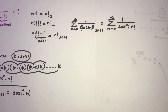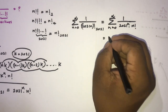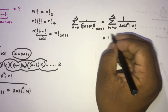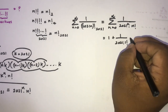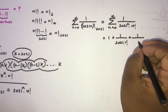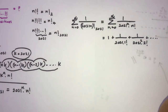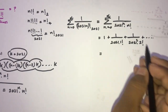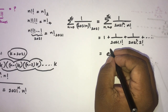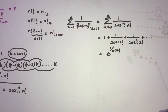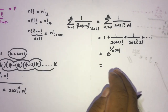If we expand this: plugging in 0 gives the first term 1, plugging in 1 gives one over 2021 times one factorial, plugging in 2 gives one over 2021 squared times two factorial, and so on. We recognize this as the expansion of the exponential function, so this equals e to the power of one over 2021.